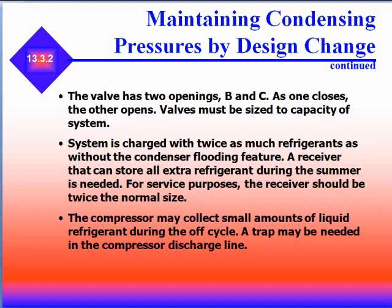The valve has two openings, B and C. As one closes, the other opens. The valve must be sized to the capacity of the system. The system is charged with twice as much refrigerant without the condenser flooding feature. A receiver that stores extra refrigerant due to summer conditions is needed, and for service purposes, the receiver should be twice the normal size. The compressor may collect small amounts of liquid refrigerant during the off cycle, and a trap may be needed in the compressor discharge line.